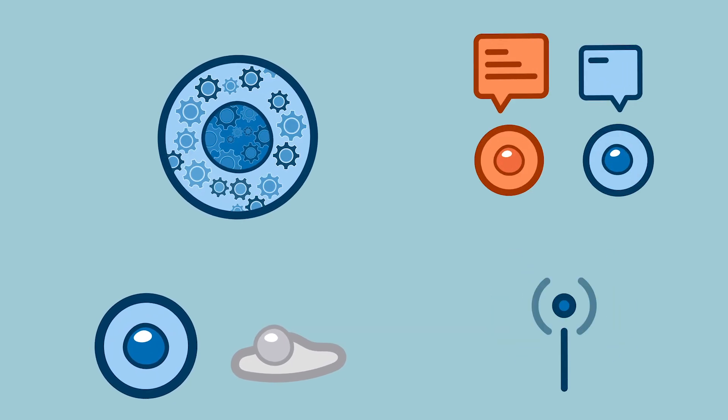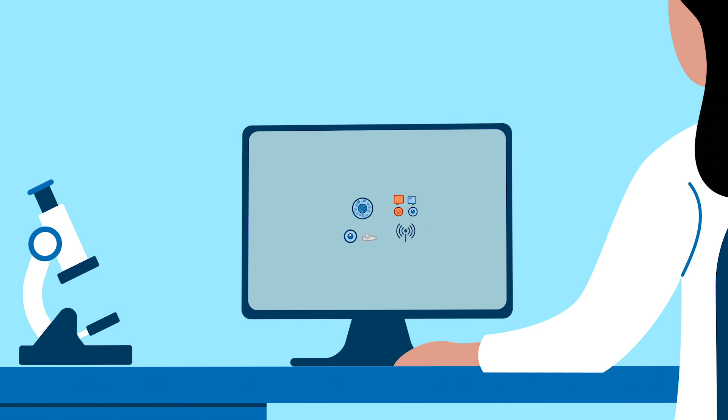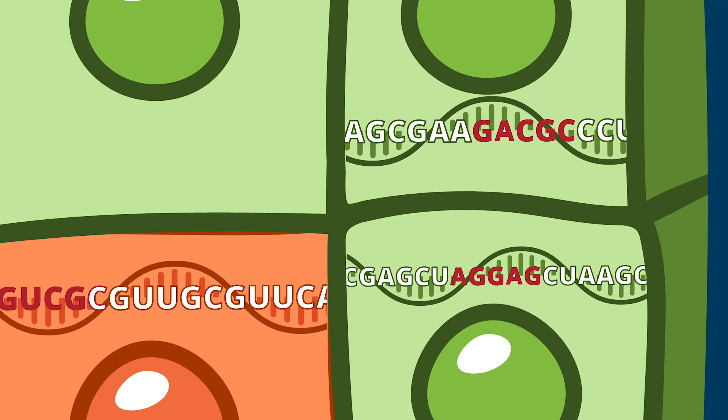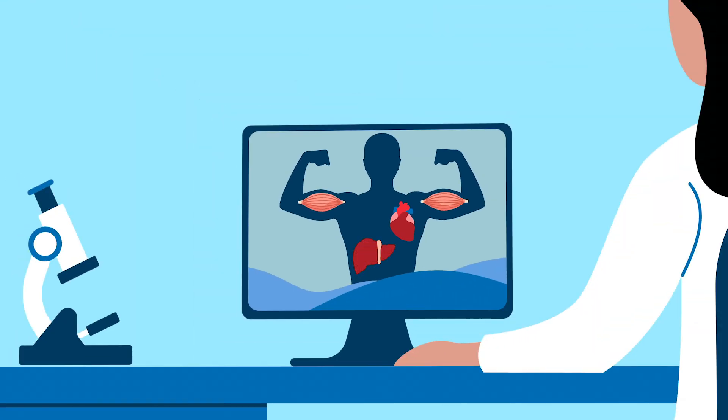Either way, spatial omics goes beyond traditional microscopy and sequencing technologies, which helps scientists better understand how organs and tissues work, map complex organs like the brain in greater detail, learn what goes on in cancers and other diseases, and see how small changes in single cells can have a big impact on biology, health, and disease.